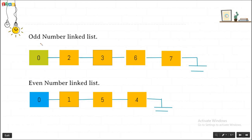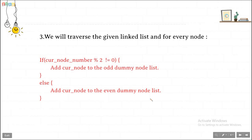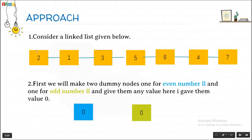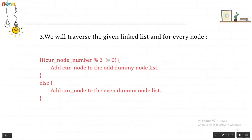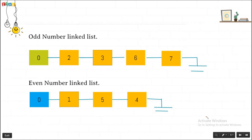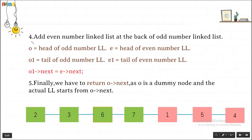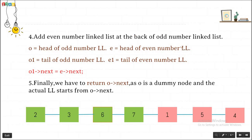Otherwise, we will add the current node to the even dummy node list. After traversing the given linked list, our odd-numbered linked list and even-numbered linked list are formed separately — nodes with odd node numbers and even node numbers respectively. After that, we connect the even-numbered linked list to the back of the odd-numbered linked list, so odd nodes come first followed by even nodes.